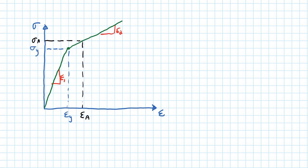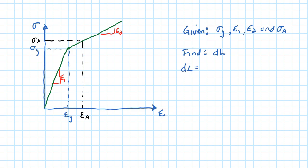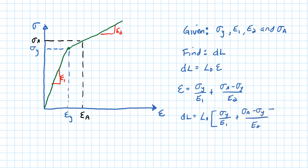We apply a stress sigma-A and want to find the strain at A. Given the yield stress, the moduli E1 and E2, and sigma-A, we want to find the change in length of the rod. The strain to point A is the yield stress over E1, plus the difference in stress between the yield stress and point A divided by E2. The change in length is then the original length L0 times that total strain.